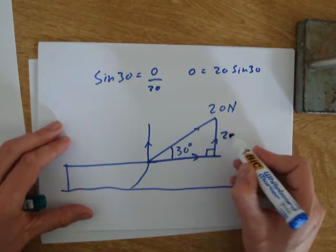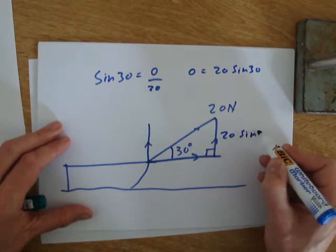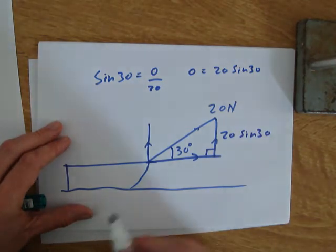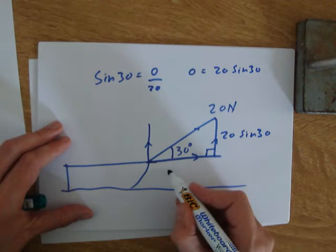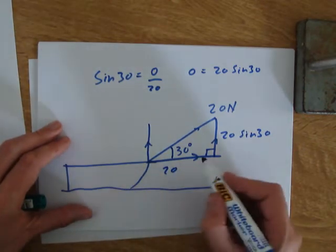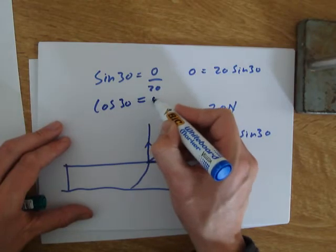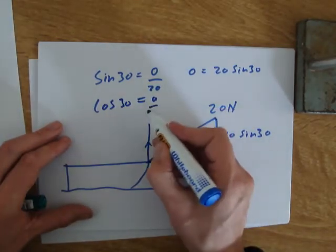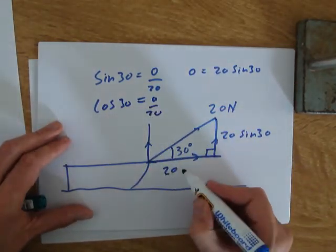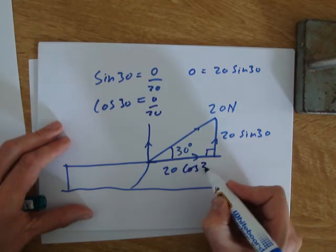The magnitude of this side, if you follow a similar thing, from cos 30 equals adjacent—that's the adjacent side here—over 20, that's 20 cos 30.